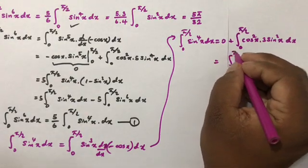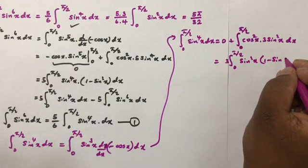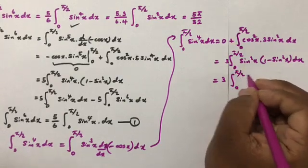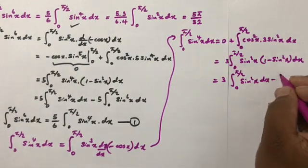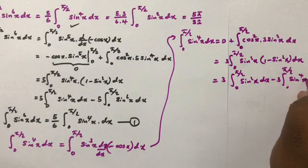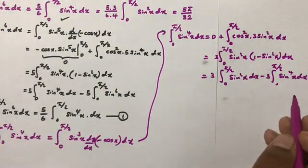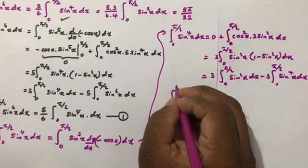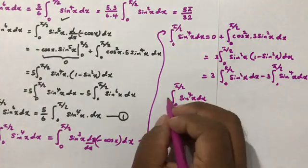Again replacing cos²(x) with 1 − sin²(x) and expanding, we get 3 times the integral from 0 to π/2 of sin²(x) dx minus 3 times the integral from 0 to π/2 of sin⁴(x) dx. Taking the sin⁴ term to the left-hand side gives 4 times the integral of sin⁴(x) dx equals 3 times the integral of sin²(x) dx.